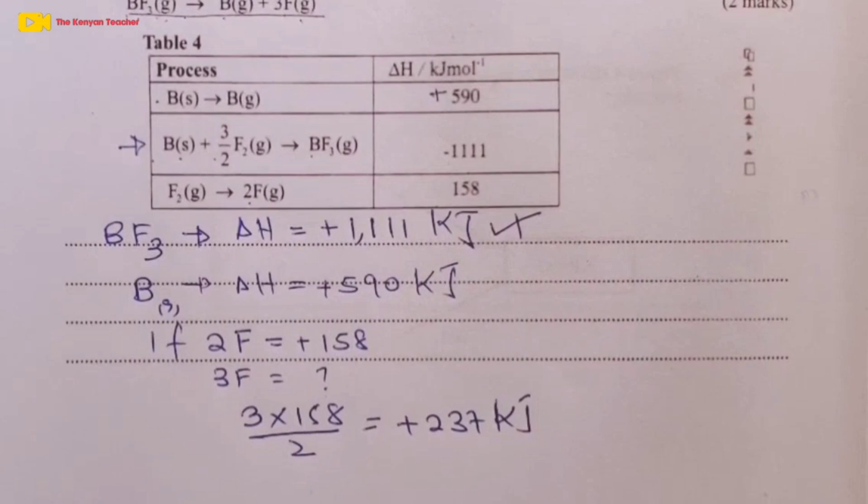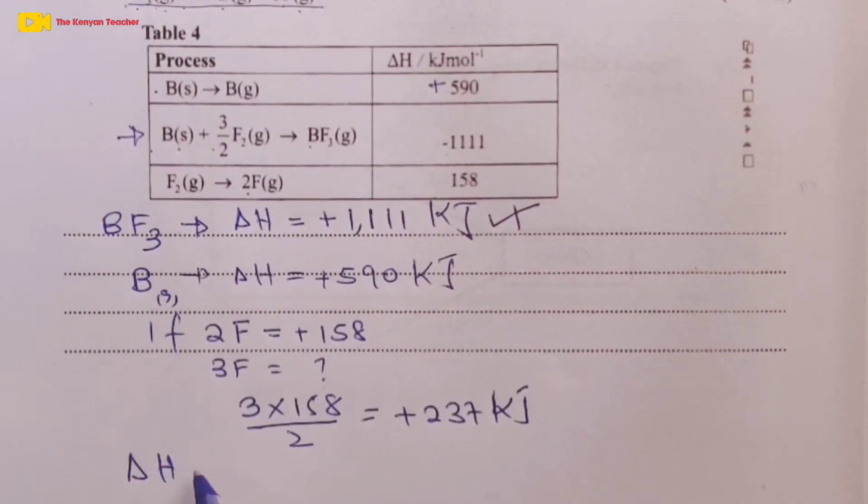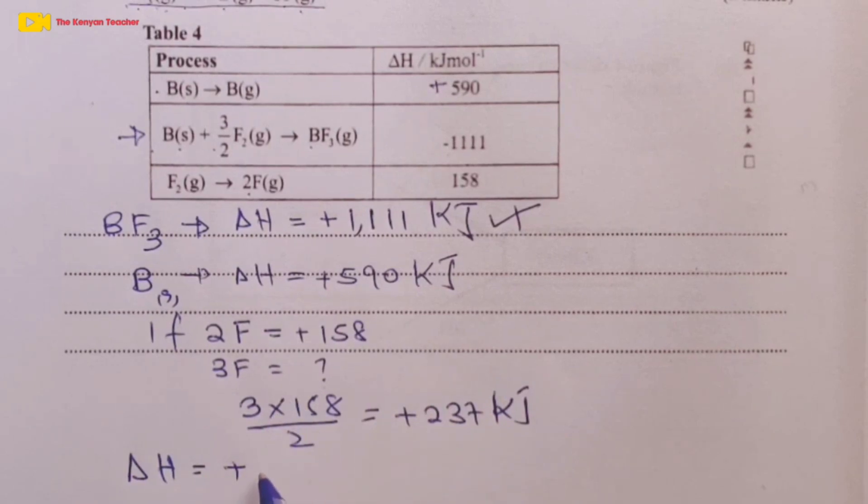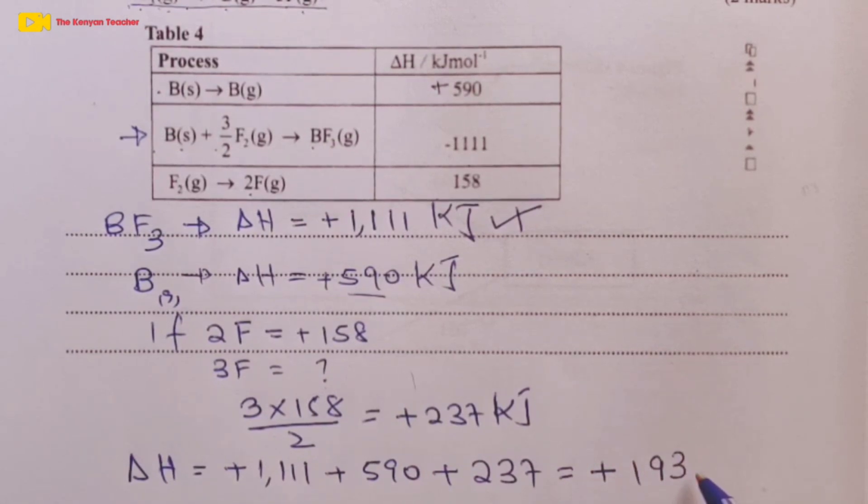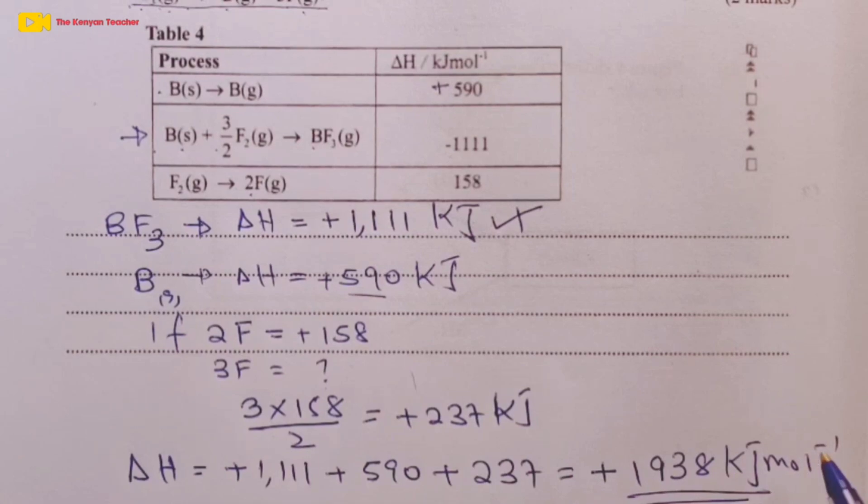To get the overall heat change, which is delta H for the reaction, we would simply add the three values. We have positive 1111, we add it to 590, and then we add it to 237. This would give a total of positive 1938 kilojoules per mole. That's the final answer. It was marked out of 2, so we earned half here. The next half would come from the calculation of how much energy will be involved in formation of 3 moles of F. Then the addition here, another half, and final answer with units, half.